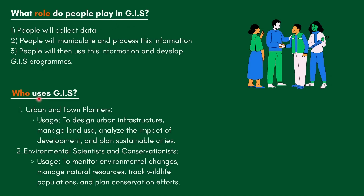Another common question is who uses GIS. The first example is urban and town planners, who use it to design urban infrastructure, manage land use, analyze the impact of development, and plan sustainable cities. The second example is environmental scientists and conservationists, who use GIS to monitor environmental changes, manage natural resources, track wildlife populations, and plan conservation efforts.